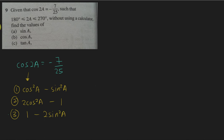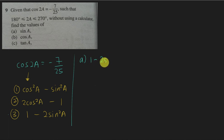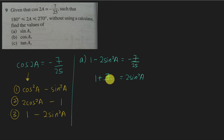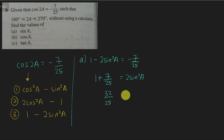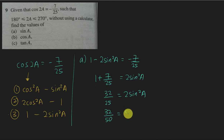So let's solve for A. Using the third formula, I substitute: 1 minus 2sin²A equals negative 7 over 25. I move 2sin²A to one side and negative 7 over 25 to the other side, giving plus 7 over 25. So 1 is 25 over 25, and 25 plus 7 gives 32 over 25, which equals 2sin²A. Moving the 2 to the other side means dividing by 2, so the 25 becomes 50. I get 32 over 50 equals sin²A.